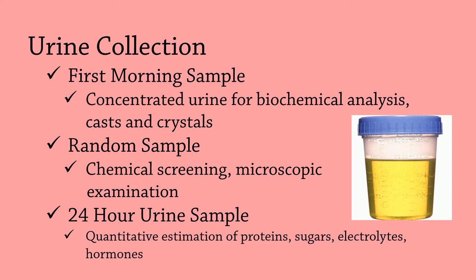The random sample is the most commonly sent to the laboratory for analysis, primarily because it is the easiest to obtain and it is readily available. This specimen is usually submitted for urinalysis and microscopic analysis. However, random specimens can sometimes give an inaccurate view of a patient's health if the specimen is too diluted and analyte values are artificially lowered.